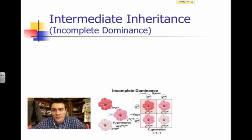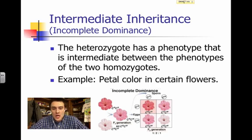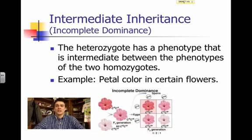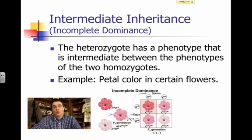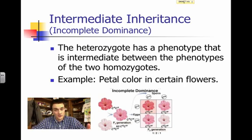Now we move into seven complex patterns of inheritance. The first is intermediate inheritance, or incomplete dominance — the heterozygote has a phenotype in between the phenotypes of the two homozygotes. Here with petal colors, we've got a red flower and a white flower, and the first filial generation ends up being pink. That's incomplete dominance — neither the white homozygous parent nor the red homozygous parent is fully expressed in the heterozygous offspring. Crossing two heterozygotes gives a 25% red, 50% pink, and 25% white.